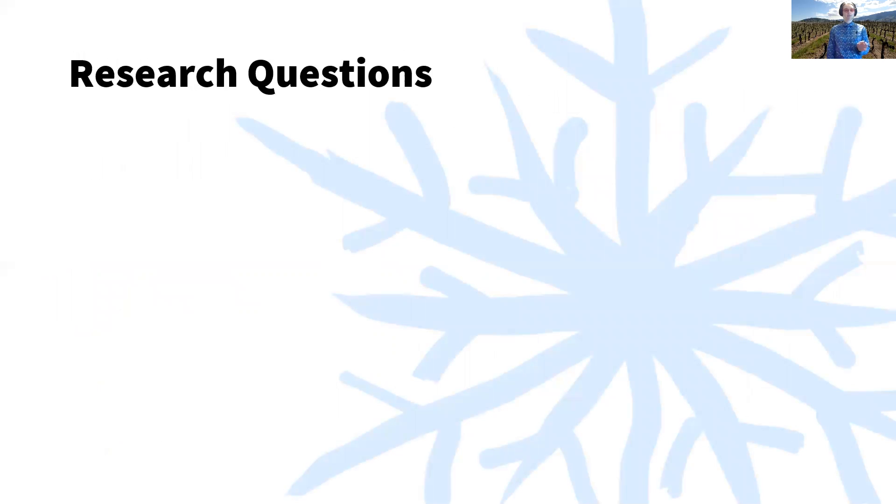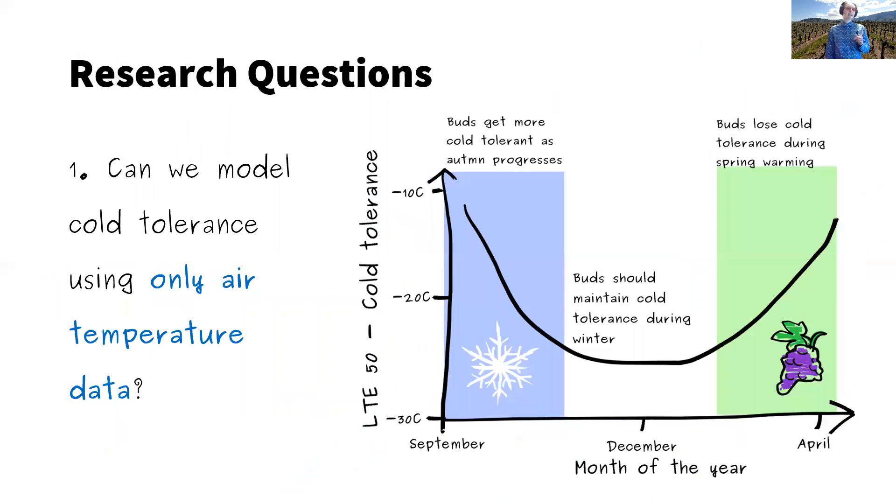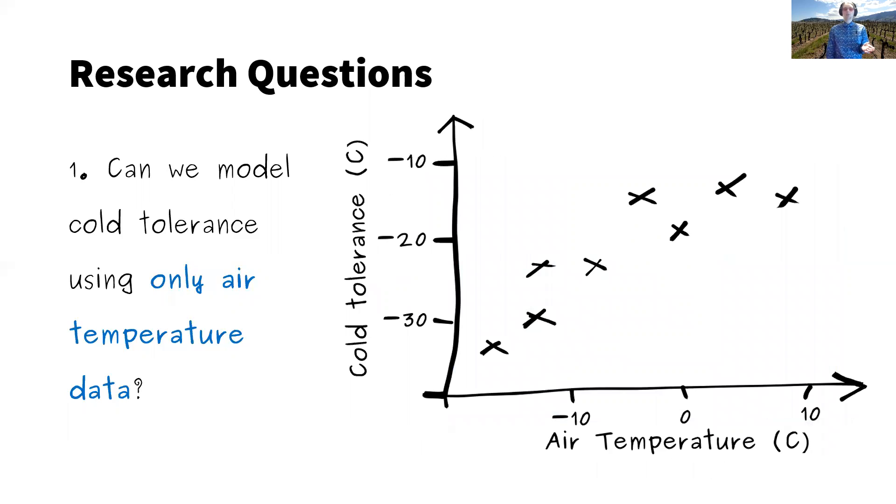So our research questions, we have three of them. Specifically one: can we model cold tolerance using just air temperature data? Traditional methods to model cold tolerance are very data heavy and involve knowing hardiness throughout the year. You have to know what the temperature was yesterday and the day before and the day before that. How does that link to cold tolerance, and it involves knowing some other parameters for plants. And we basically don't have this amount of information for many species. We would like to do something simpler where you basically plug air temperature directly into the model and you just get cold tolerance out. And this, if it works, would be much easier to apply to a wider variety of species.